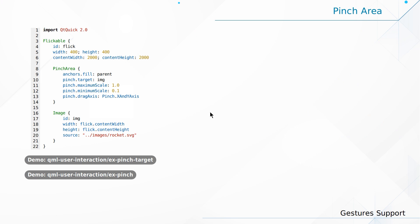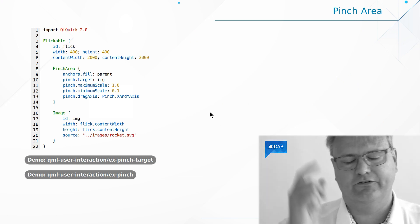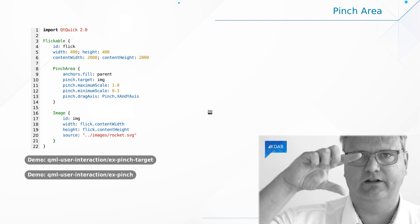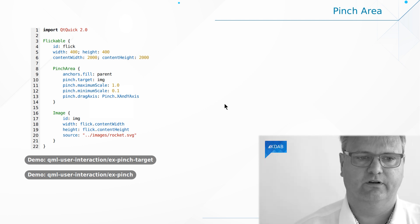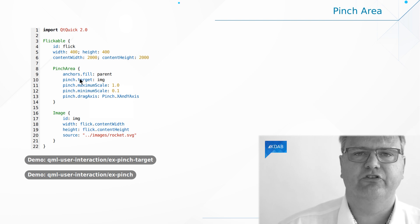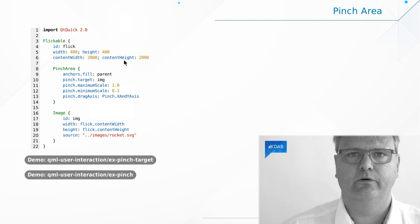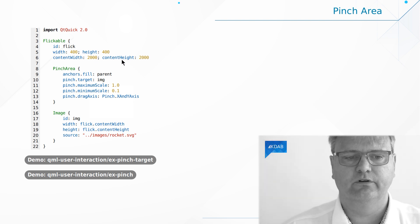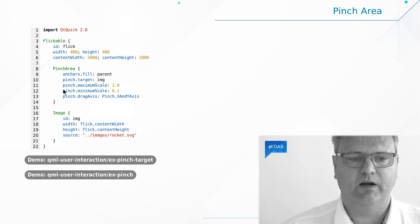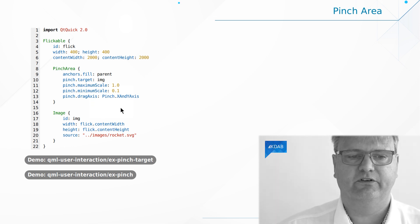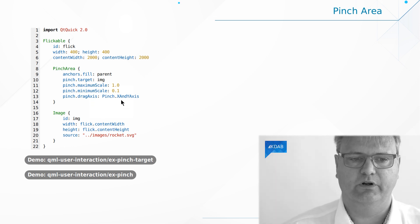That was flicking. Next is pinching — the zoom with two fingers. The way it works is that you often have a PinchArea inside your Flickable. You can see in this code: I have my Flickable with content width 2000 and content height 2000. Then I have my PinchArea, which is set up with a bunch of properties to specify exactly what I'm pinching.